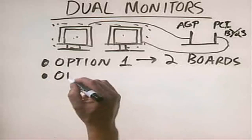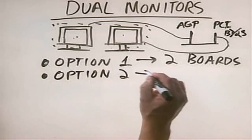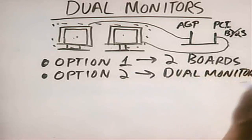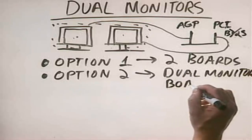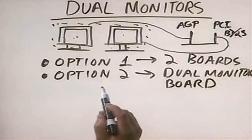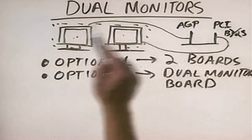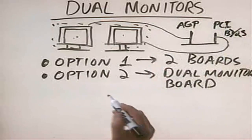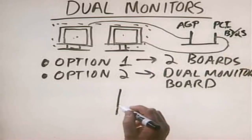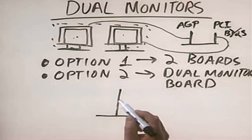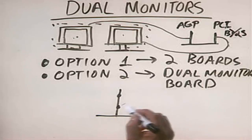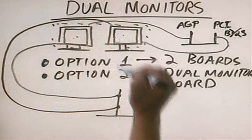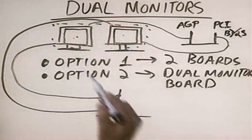The second option is to buy a dual monitor video board. This is a simpler solution. You install a single card in an AGP slot or PCI Express slot. It has two video ports on it, so you connect one monitor to one port and the second monitor to the second port, giving you your dual monitor solution.